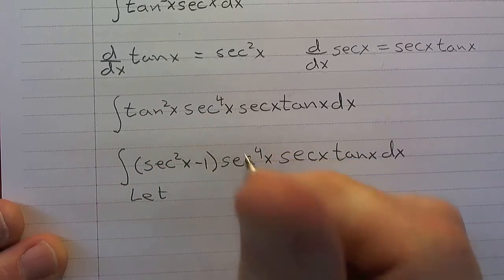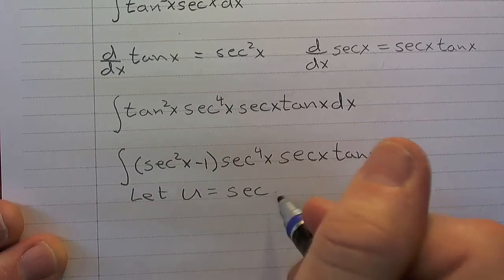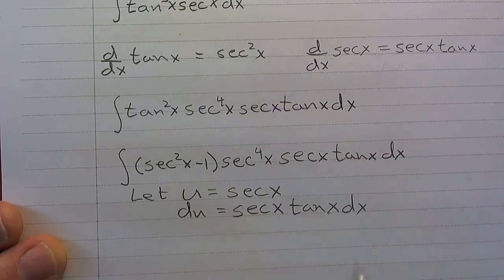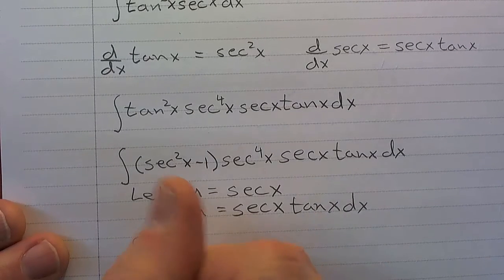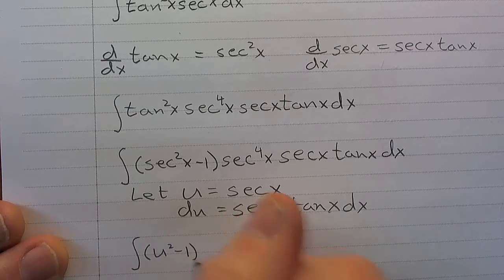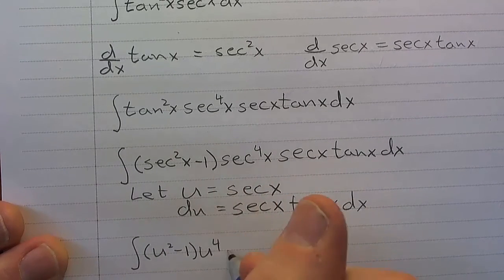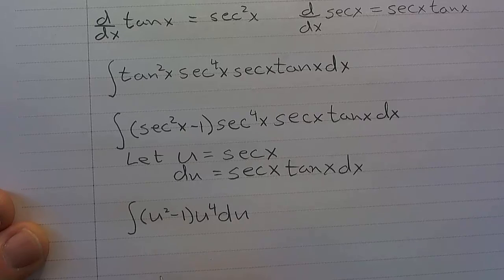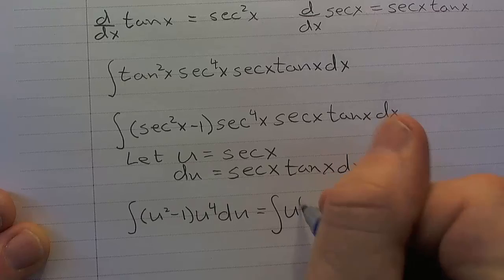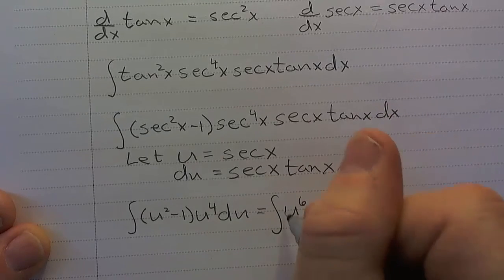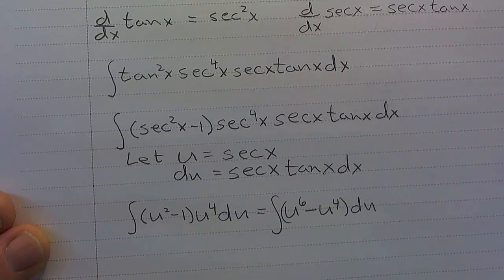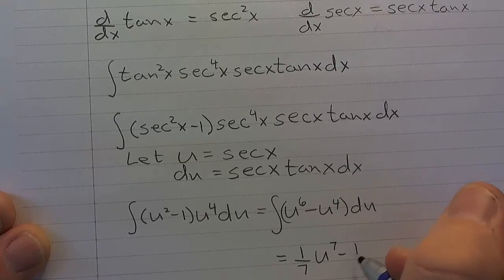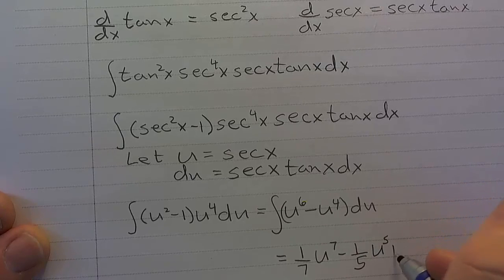I rewrite as tangent squared x times secant to the fourth x times secant x tan x. Then I write tangent squared x as secant squared x minus one. So I have secant squared x minus one times secant to the fourth x times secant x tan x. If I let u equal secant x, then du is secant x tan x dx — that's exactly what I have. The integral becomes u squared minus one times u to the fourth du, which is u to the sixth minus u to the fourth du. Then applying the power rule for integration gives the antiderivative.